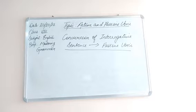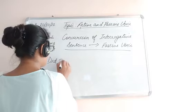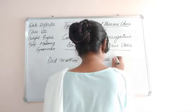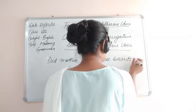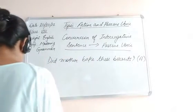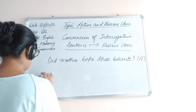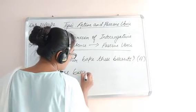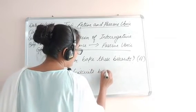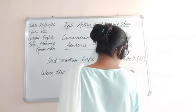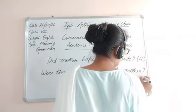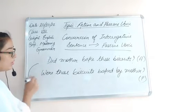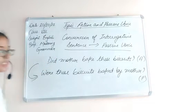Another sentence: 'Did mother bake these biscuits?' The passive voice becomes: 'Were these biscuits baked by mother?' So this is an interrogative active voice sentence converted into an interrogative passive voice sentence. It is evident that auxiliary verbs do, does, did in an interrogative active sentence change into is, are, were in the passive structure.